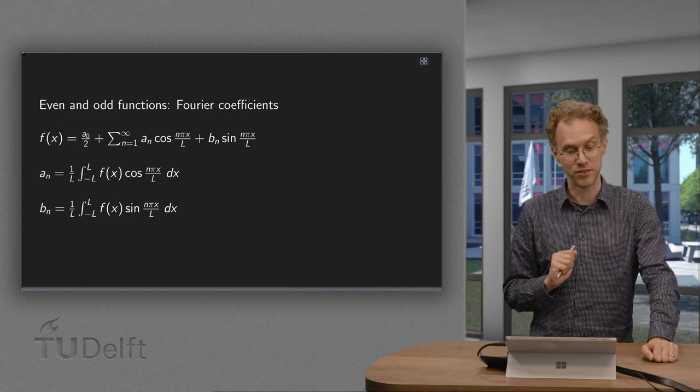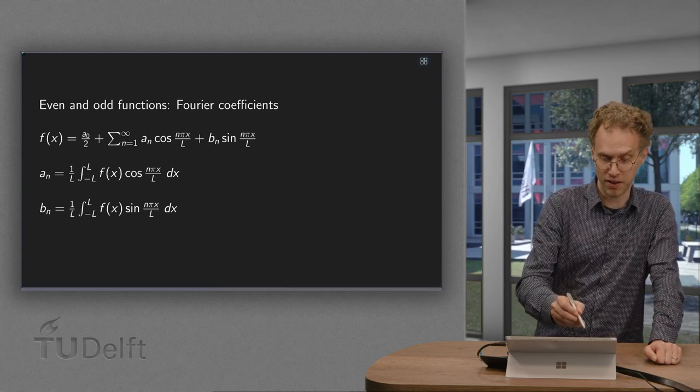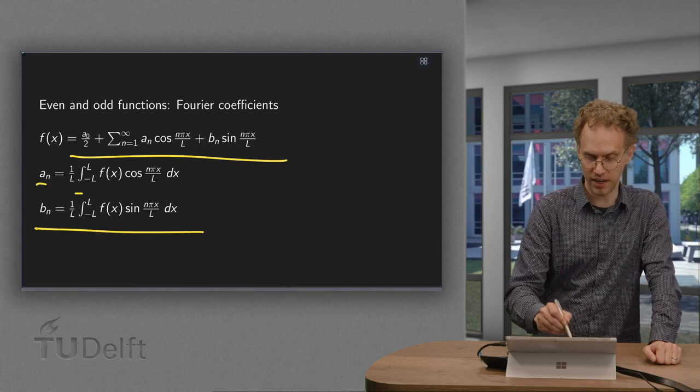That is what you will learn in this video. So in general, expression for a Fourier series of f looks like this. I've seen this before, with coefficients a_n and b_n.